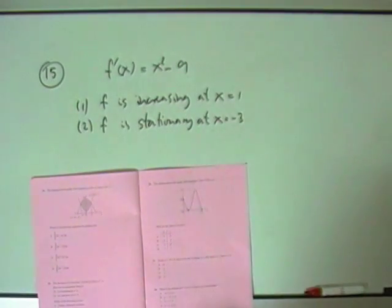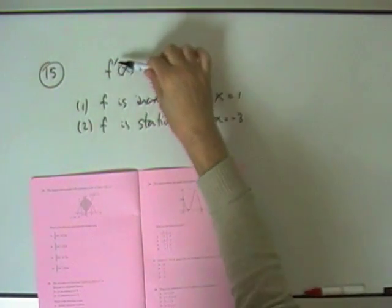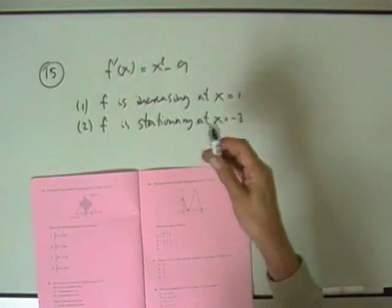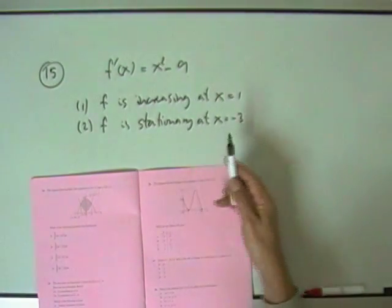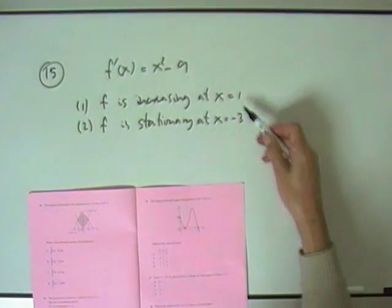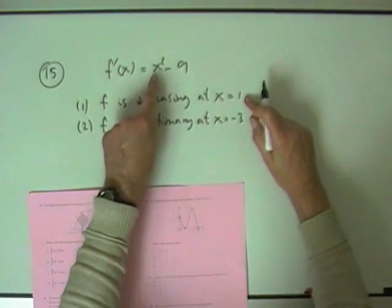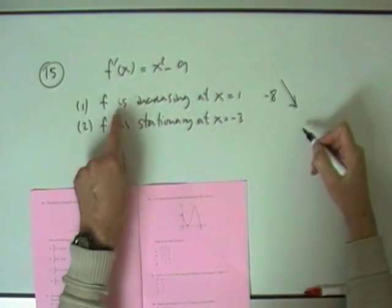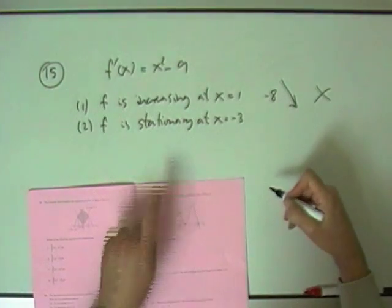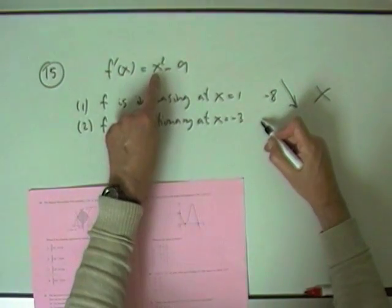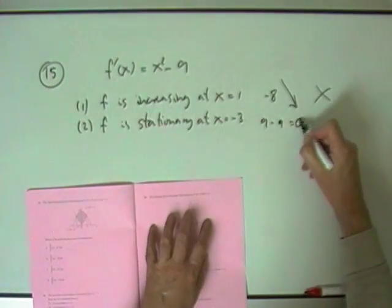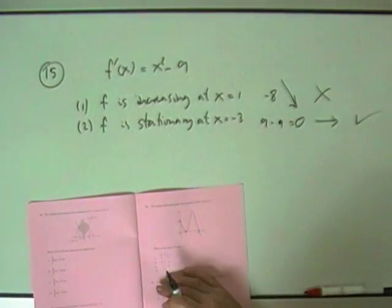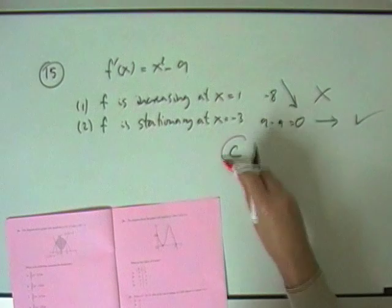Right, number 15, a multiple selection question. You're given this function, in fact you're given its derivative, and it just asks, is it increasing, decreasing, stationary? So it's the derivative you want. The sign of the derivative will tell you whether it's going up, that's positive. Stationary? That's 0. Or decreasing? That's negative. Now x equals 1. So you're just trying one at a time. 1² is 1. Take away 9, comes to -8. Now -8 means it's heading down. It says it's increasing, so that statement's false. X equals -3. Well, -3² is 9. 9 minus 9 is 0. That means it's horizontal. That means it's stationary. So statement 2 is true. So 1 is false, 2 is true. Only statement 2 is true. Answer is C.